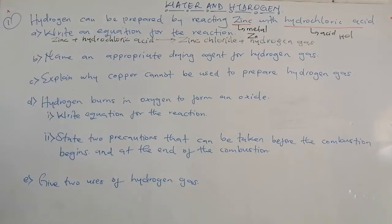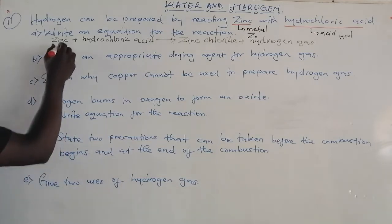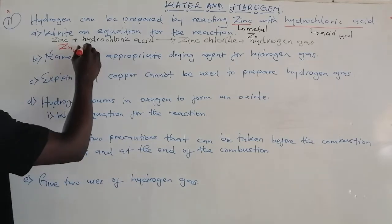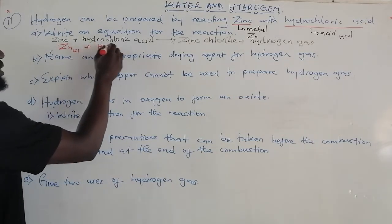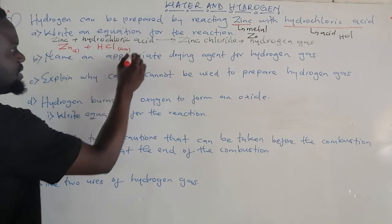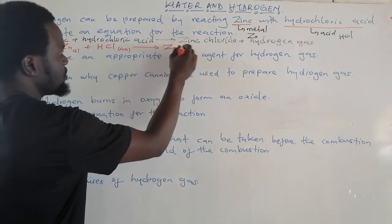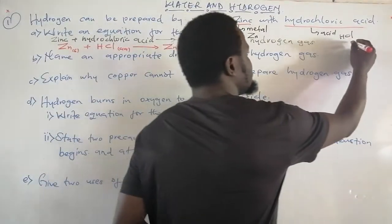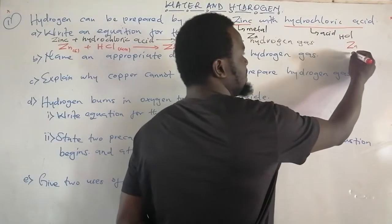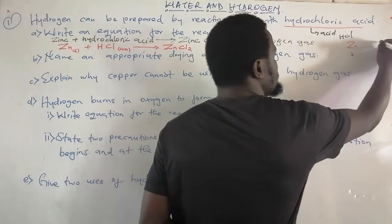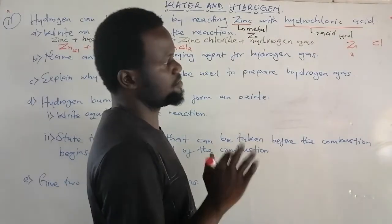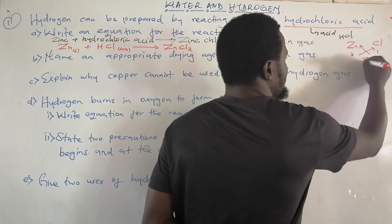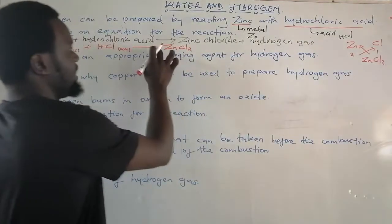Now, in case you had a chemical equation question, I will write zinc. Since it is a metal, we give it the state symbol solid, plus hydrochloric acid in aqueous state. It forms zinc chloride. Zinc is a transition element with a valency of two. Chlorine is a halogen, group seven, with a valency of one. When we cross-multiply, we get zinc chloride, ZnCl₂. That is why we have that formula.